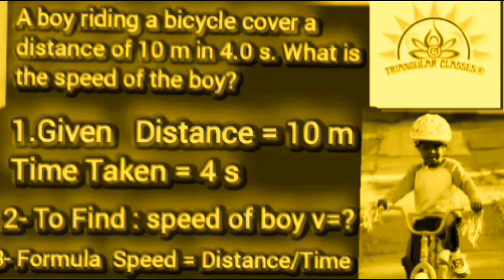For example: a boy riding a cycle covers a distance of 10 meters in 4 seconds. Find the speed of the boy. Solution — Step 1: Write given. Distance equals 10 meters. Time taken equals 4 seconds. Step 2: Write to find. To find: speed of the boy. V equals question mark.